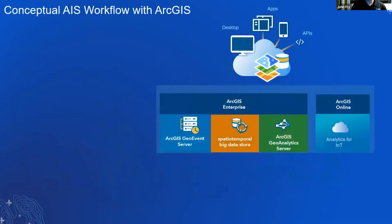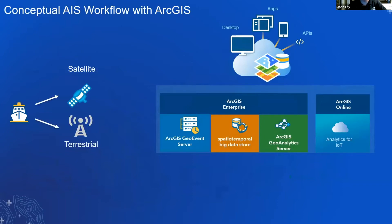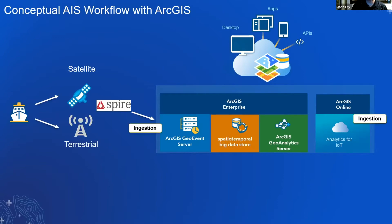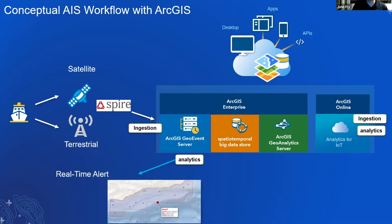Here's a brief slide about a conceptual AIS workflow with ArcGIS. I work a lot with defense clients such as the Coast Guard, NATO, and Navy. Sometimes they need to provide AIS from a provider called Spire. Spire has a constellation of satellites — ships broadcast signals through satellites or a terrestrial receiver to them. I'm consuming the Spire API through ArcGIS GeoEvent Server or Analytics for IoT.